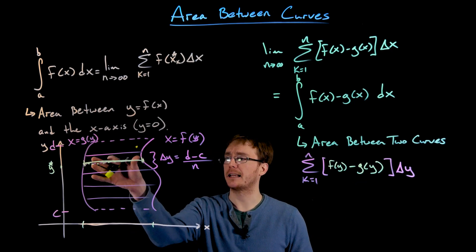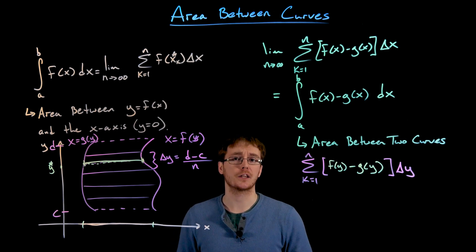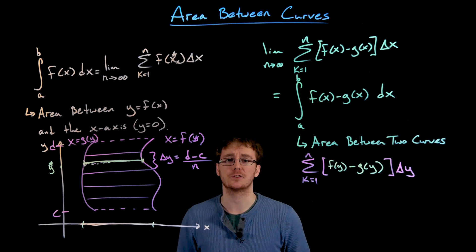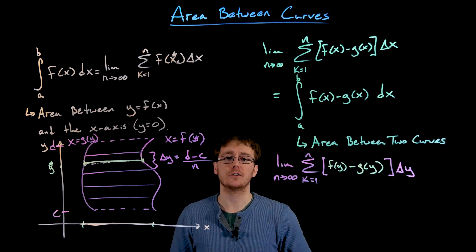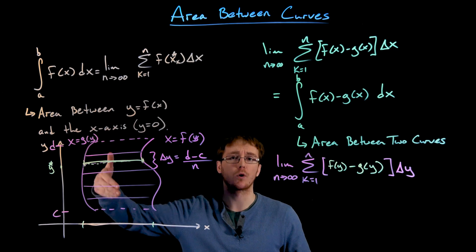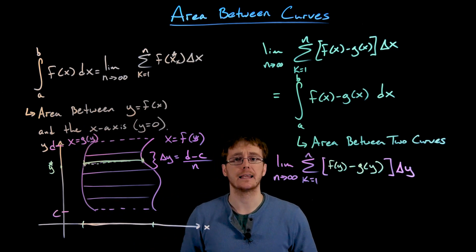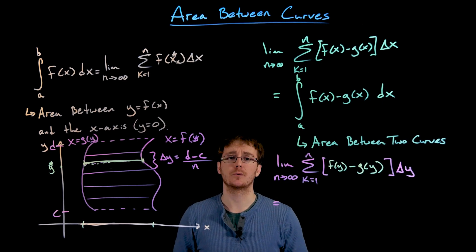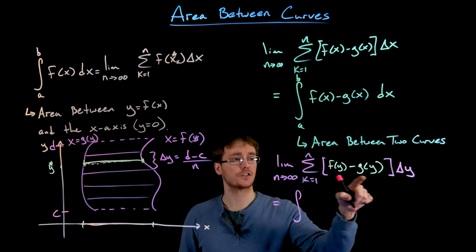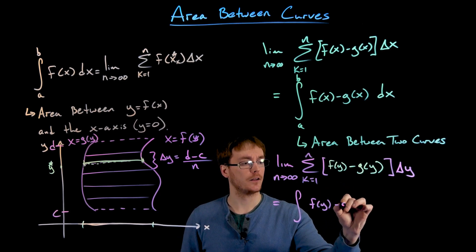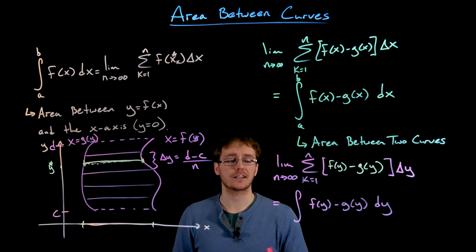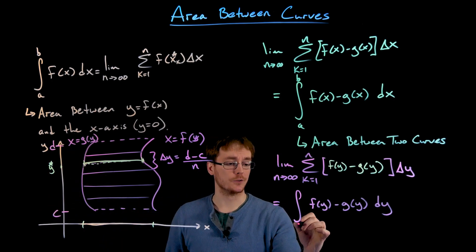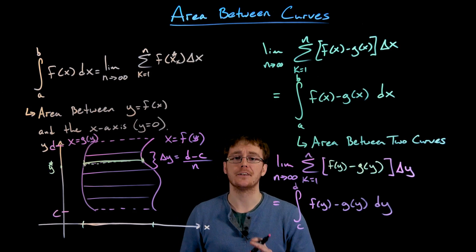This Riemann sum approximates the area between our two curves using horizontal strips and approximating rectangles. To go from the approximation to the exact area, we take the limit as n goes to infinity, meaning we use more and more horizontal strips whose heights approach zero. Just like before, taking the limit of a Riemann sum converges to a definite integral: we integrate f of y minus g of y, our delta y turns into the differential dy, and our limits of integration are now the y values that describe our region.